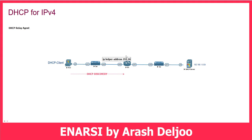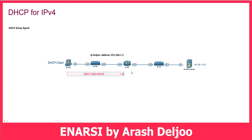The command is 'ip helper-address' followed by the IP address of the DHCP server: 192.168.15. We are telling Router 1 that the IP address of the DHCP server is 192.168.15. Because of that, when R1 receives the broadcast DHCP Discovery, it should create a new DHCP Discovery.